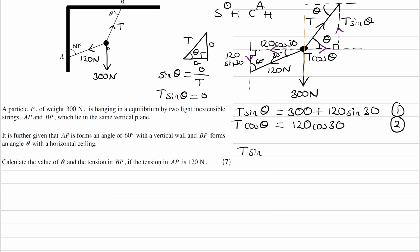So if I have T sine theta all over T cos theta, that's this over that. The T's cancel, and the left-hand side just then becomes tan theta.